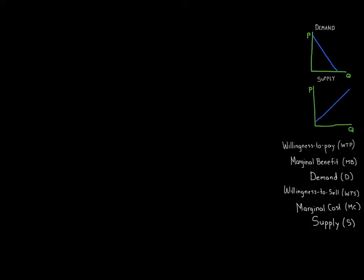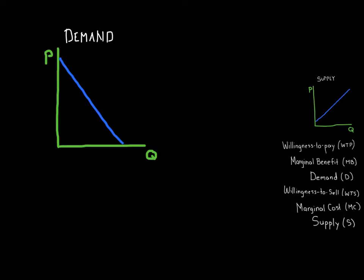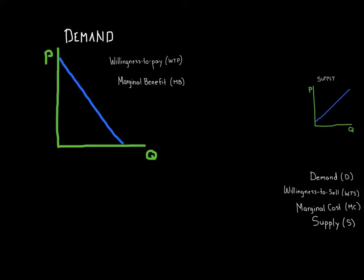We want to think about consumer surplus, producer surplus, and market efficiency. But before we can do that, we need to understand demand and supply a bit better. The demand curve shows how much consumers are willing to pay for a particular good. What determines how much a person is willing to pay? How much value they get — specifically, how much benefit they get from that last good. This is why willingness to pay and marginal benefit are the same thing, and both are equal to the demand curve.